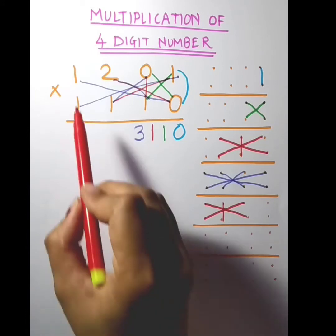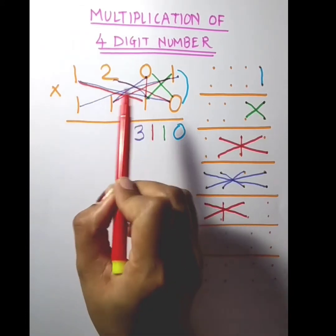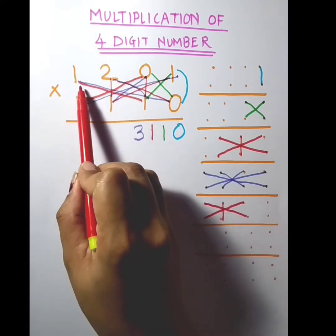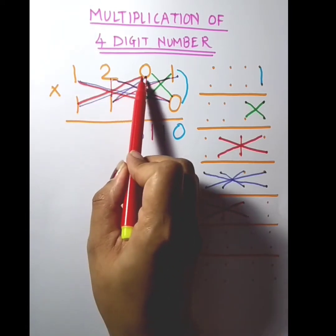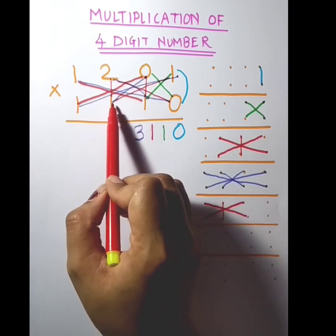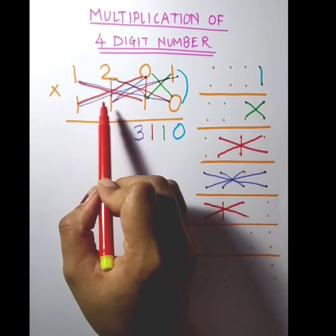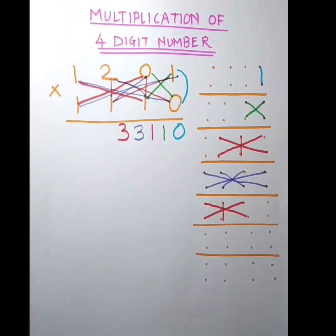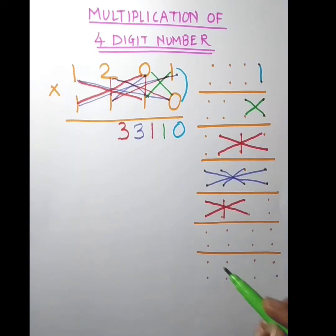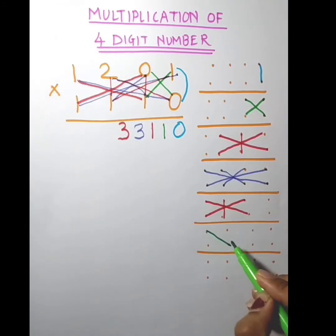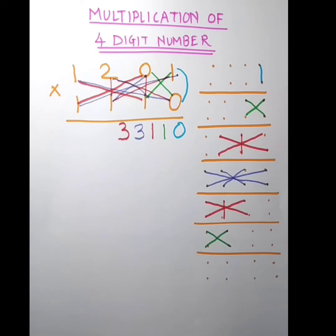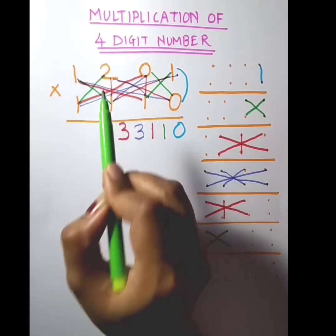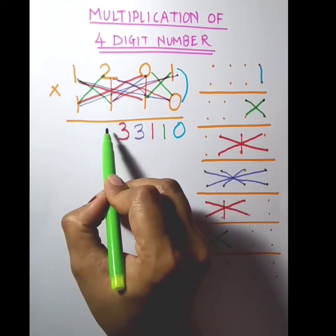I will multiply 1 into 1, 0 into 1, and 2 into 1. So 1 into 1 is 1, 0 into 1 is 0, and 2 into 1 is 2. So 2 plus 0 plus 0 plus 0 plus 1 is 3 — again 3. Now multiplying this into this plus this into this: 2 into 1 plus 1 into 1 is 2 plus 1, which is again 3.